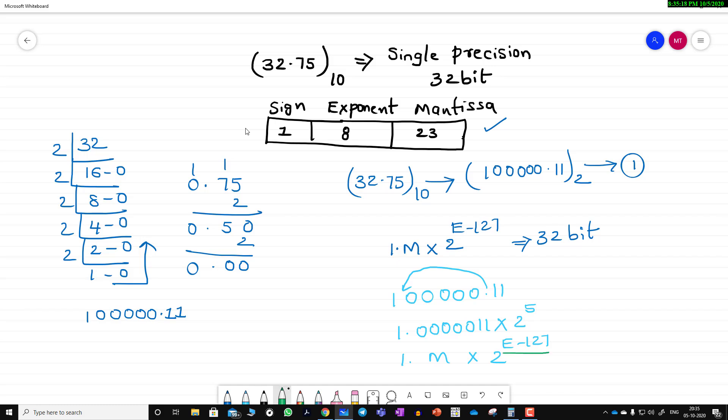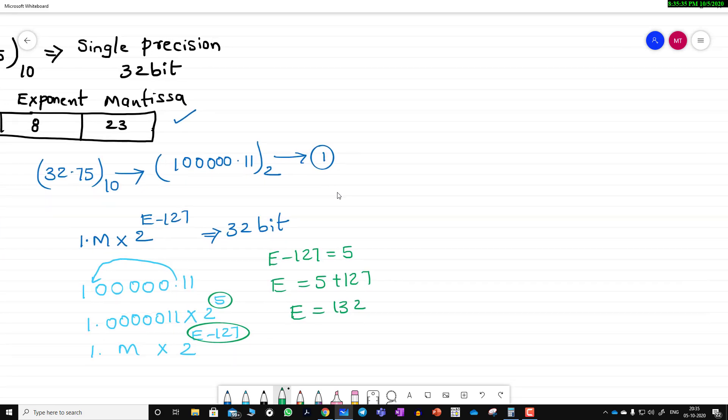Comparing e minus 127 with 5, e minus 127 equals 5, so e becomes 5 plus 127, which equals 132. Now let's take the binary equivalent for 132 using the same process of continuous division.